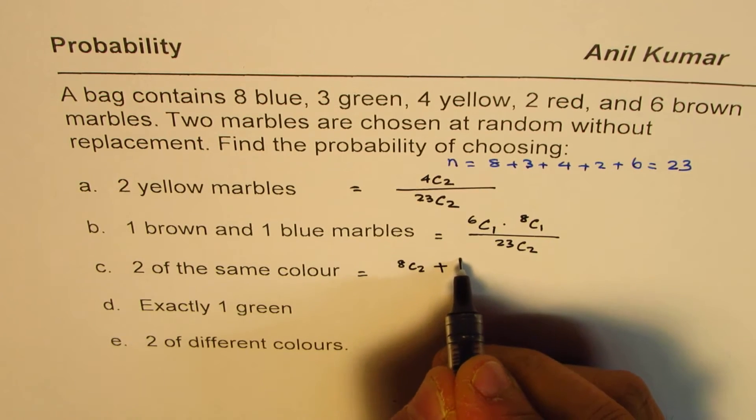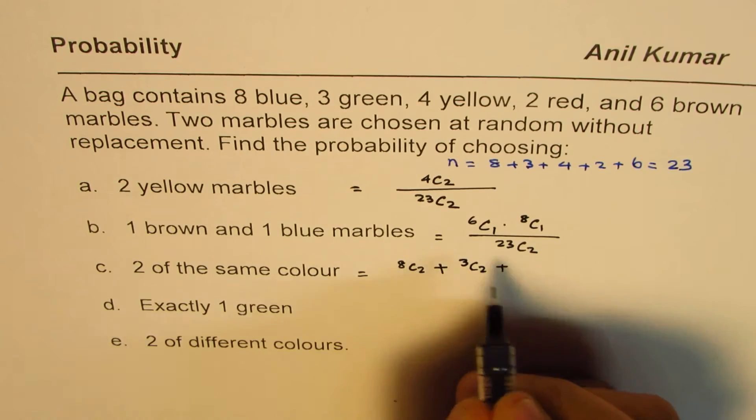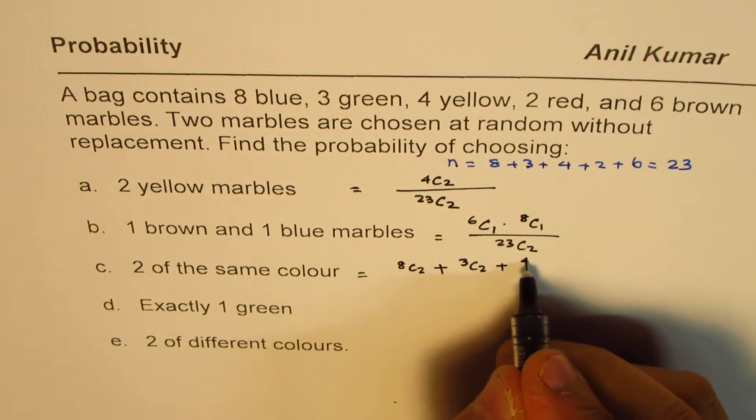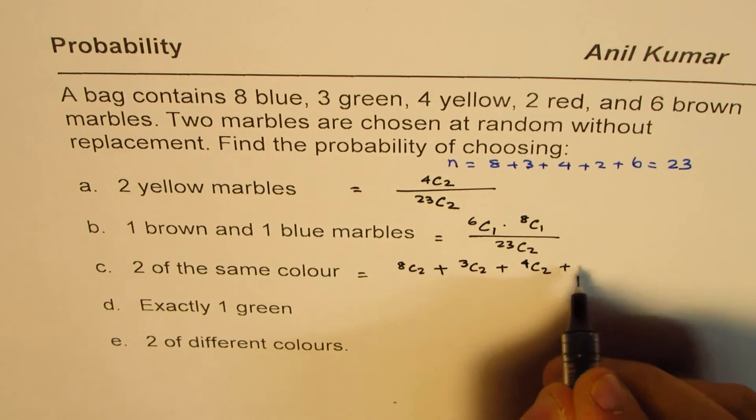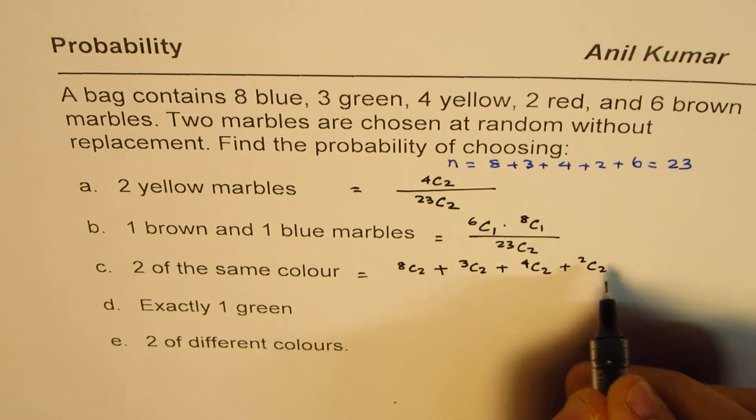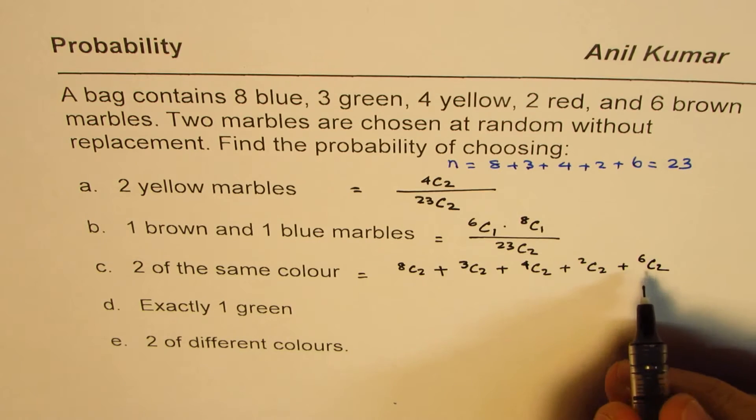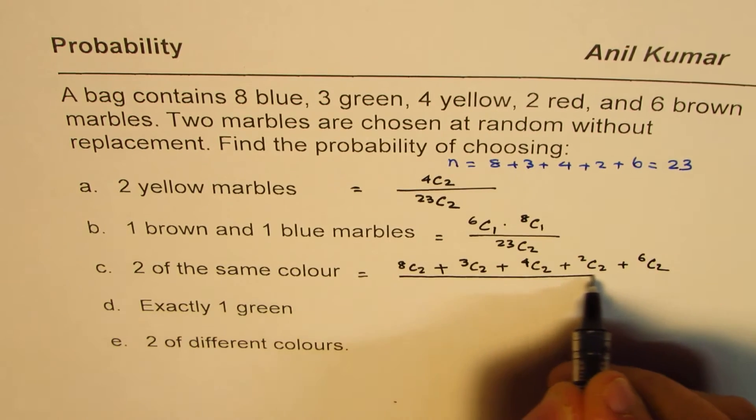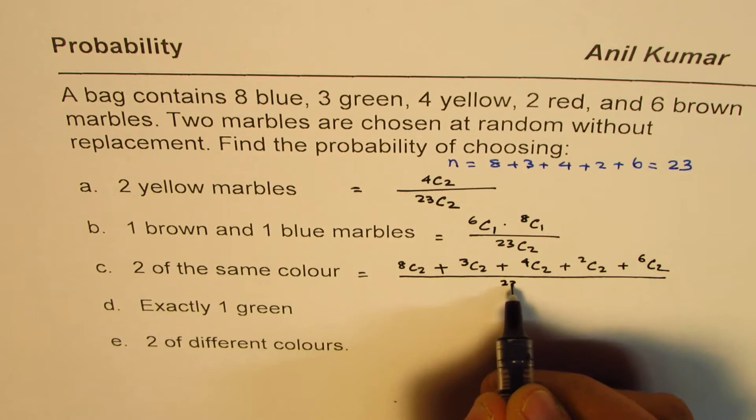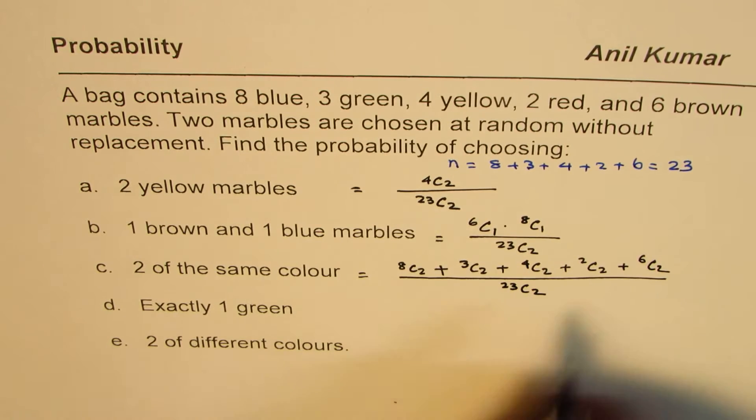2 green, that means from 3, we select 2. 2 from yellow, so 4C2. 2 from red, 2C2. And 2 from brown, which is 6, 6C2. So all this, and they all have common denominator, total number of combinations, 23C2. So that is your answer.